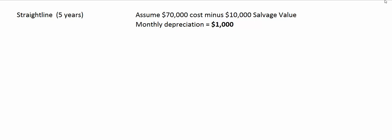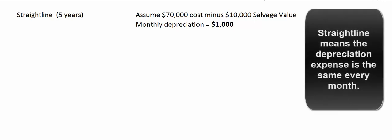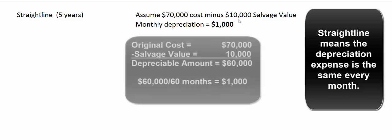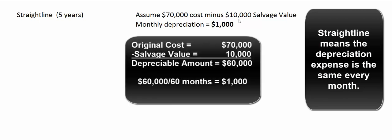The most common method is straight-line, and most companies use this on their books. If we had a $70,000 asset we think we can sell for $10,000 when we're done with it in five years, our total net cost is $60,000. Five years times 12 months gives us 60 months. So $60,000 divided by 60 months means every month we debit depreciation expense and credit accumulated depreciation for $1,000.